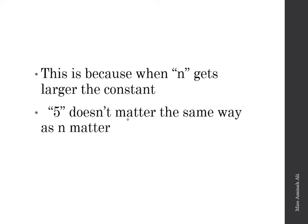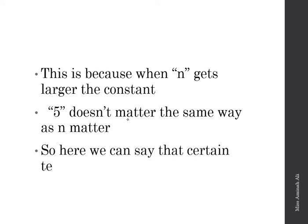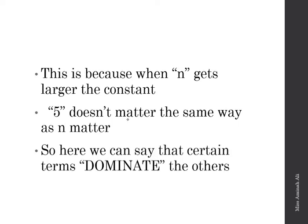Agar aap dekhein ke n bahut bada hota jata hai, to 5 matter nahi karta in Big O notation. In practice ye ho sakta hai ke 5 matter kare, lekin filhaal hum Big O notation ki baat kar rahe hain aur uska ek general rule hai ke hum constants ko ignore kar dete hain. Kuch terms aise hain jo dominating hoti hain — jaise yahan pe n dominating term hai kyunki ye input size hai aur variable hai, aur 5 constant hai.